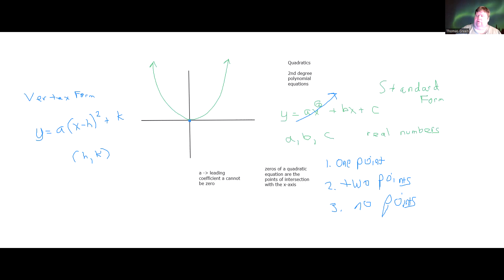The third case where there's no points of intersection is a situation where the quadratic equation has what are known as complex solutions, complex numbers. And if that occurs, your parabola will either be entirely above the x-axis or entirely below it.